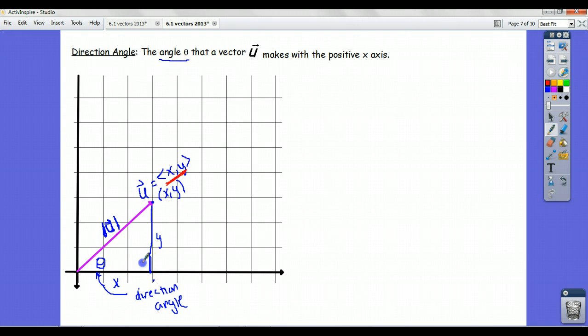Look at this right triangle here, and notice that the cosine of the angle theta is equal to x over the hypotenuse, which is the absolute value of u. And that means if you multiply both sides by the absolute value of u, x equals the absolute value of u times cosine of theta.